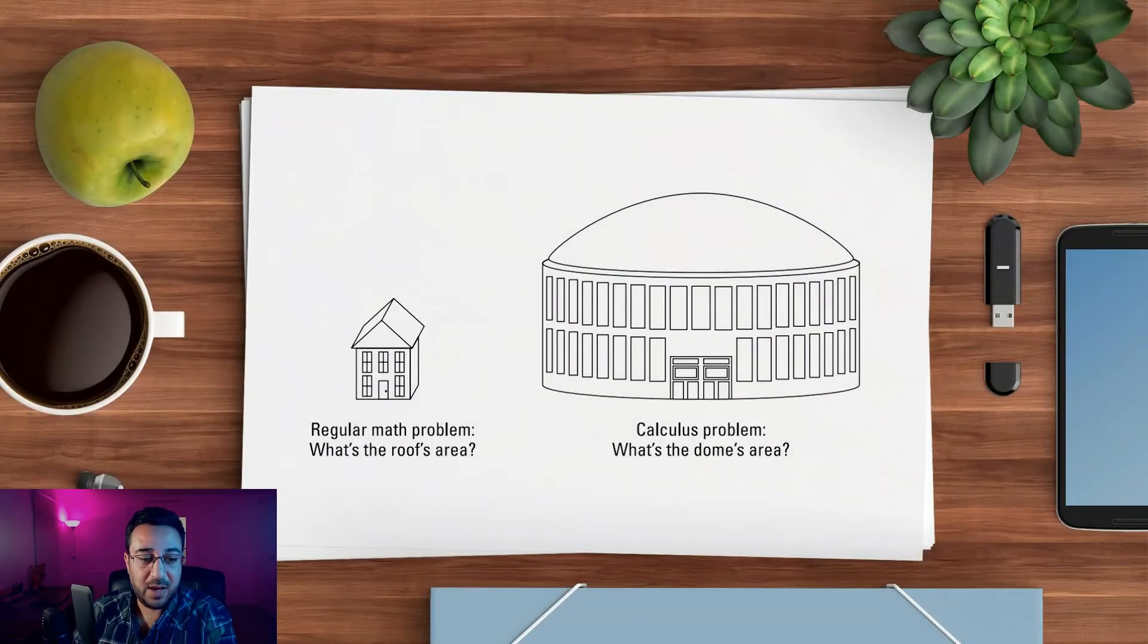Next example: you have a simple house where you want to tell how much material you need to put on to cover the roof. For that little home, you have two rectangles on both sides and a triangle. You can use simple math to tell how much area you have, then how much material you need based on the dimensions of each piece. But if you have a dome on the right-hand side, that's again a curvature, a real-life problem more than the home.